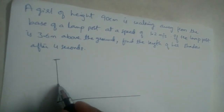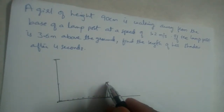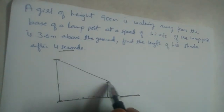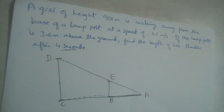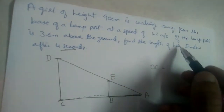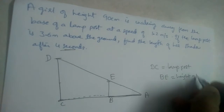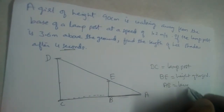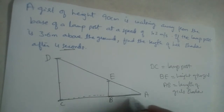The girl has started from the base of the lamppost and she is walking. Suppose she has walked till here and stopped after 4 seconds. This is the shadow. Let us join the points and make a triangle. We name the points A, B, C, D, and E. DC is the lamppost height, BE is the height of the girl, and AB is the length of her shadow.